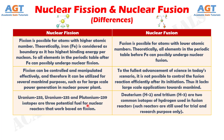Number nine: uranium-233, uranium-235, and plutonium-239 isotopes are three potential fuels for nuclear reactors that work based on fission. Whereas deuterium and tritium are two common isotopes of hydrogen used in fusion reactors; such reactors are still used for trial and research purposes only.